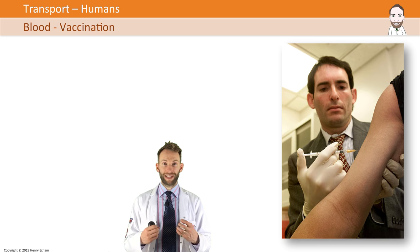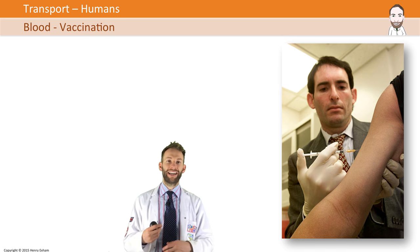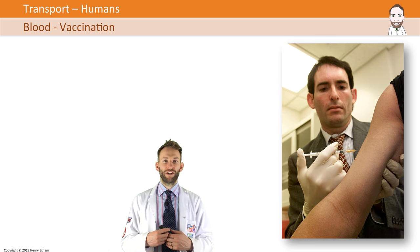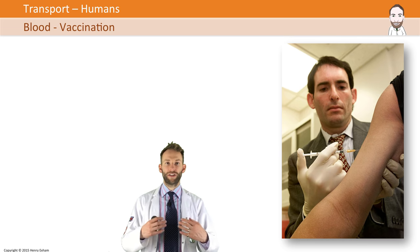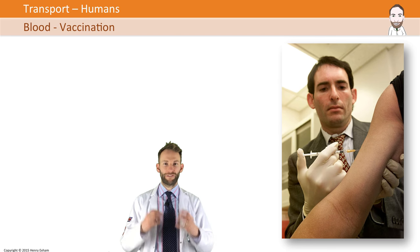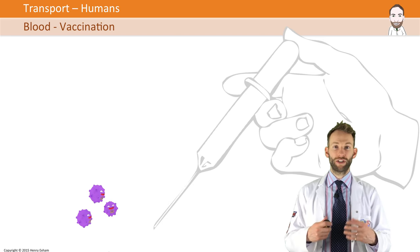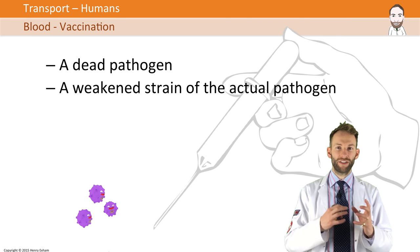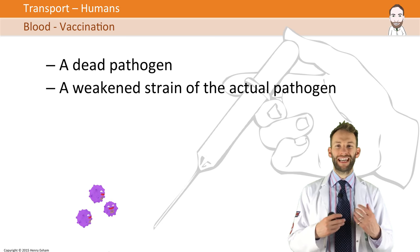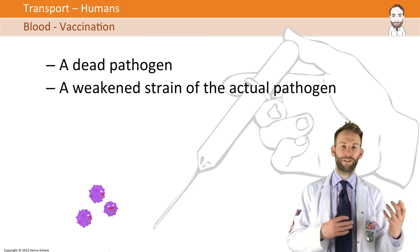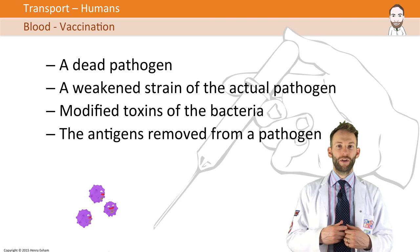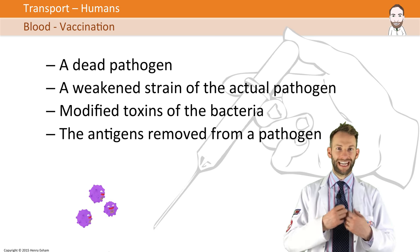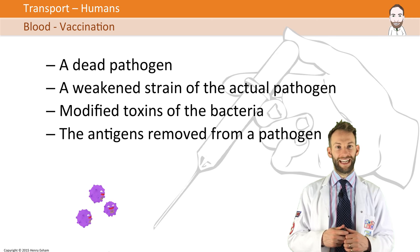We can actually trick the body into thinking it's been infected. You can give the body immunological memory by giving it a vaccination with a bit of a pathogen so that your body learns how to make antibodies against that pathogen. If you get it for real, you can go straight into the secondary immune response and fight it off really quickly. The vaccination could be a dead form of the pathogen, a weakened strain that scientists have made weaker, modified toxins of the bacteria, or just the antigens removed from the pathogen — so that you can make antibodies against those antigens.